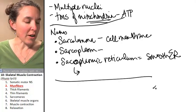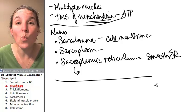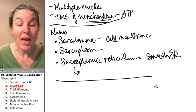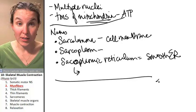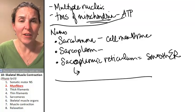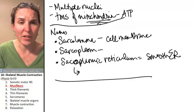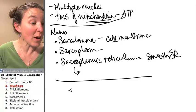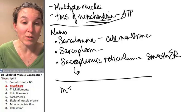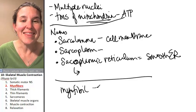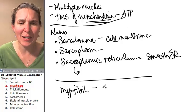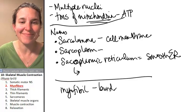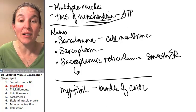There's something very weird not found in other cells — nuclei, mitochondria, those are found in other cells and just have different names here. But you have something called a myofibril. A myofibril is a bundle of contractile proteins, and they're actually like cytoskeleton.